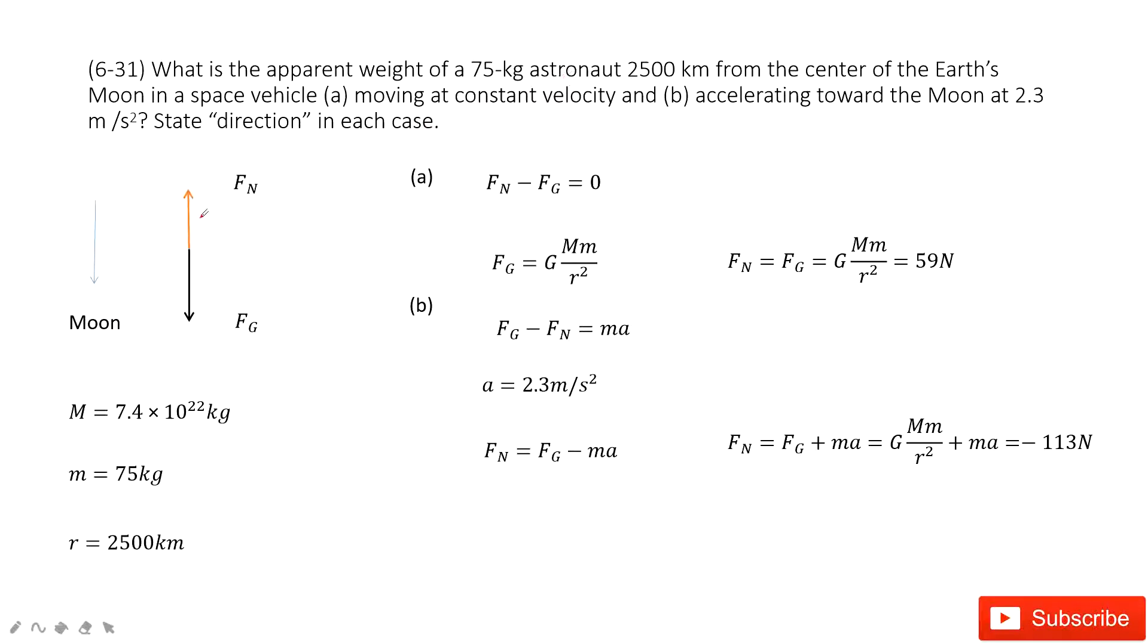This astronaut is located 2500 kilometers from the center of the Earth's moon. We need to decide its weight. First thing, we can define the positive direction. The positive direction we consider is towards the moon.